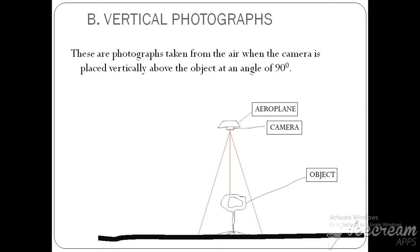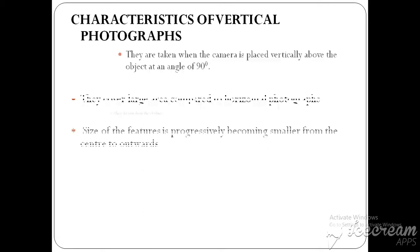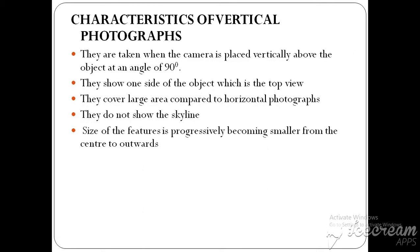We have the characteristics of vertical photographs. The first characteristic: it is taken when the camera is placed vertically above the object. Another characteristic: they show one side of the object, which is the top view. Unlike horizontal photographs which show the front view — the side facing the camera — vertical photographs show only the top view of the object.